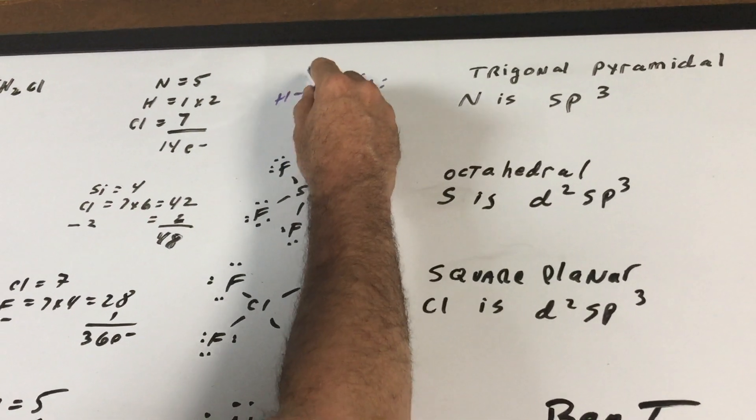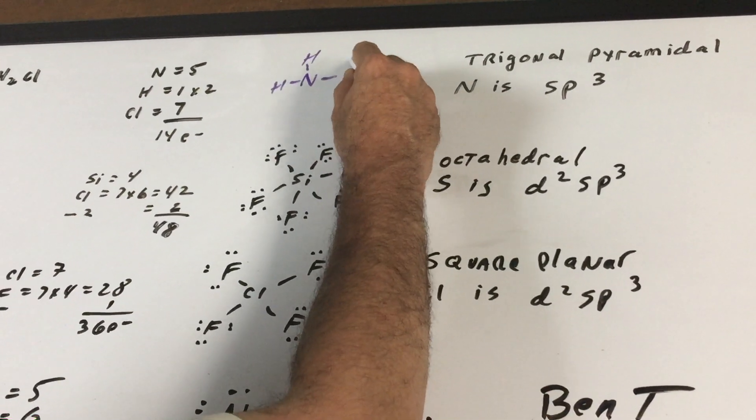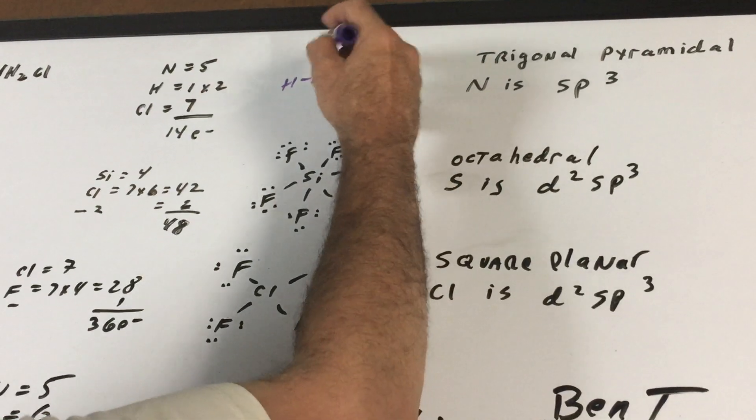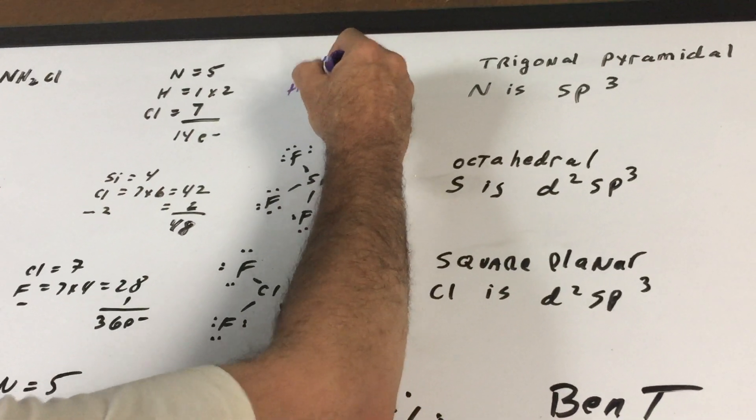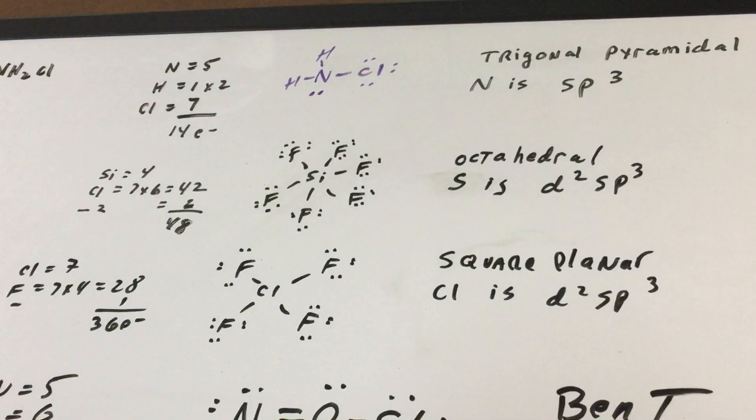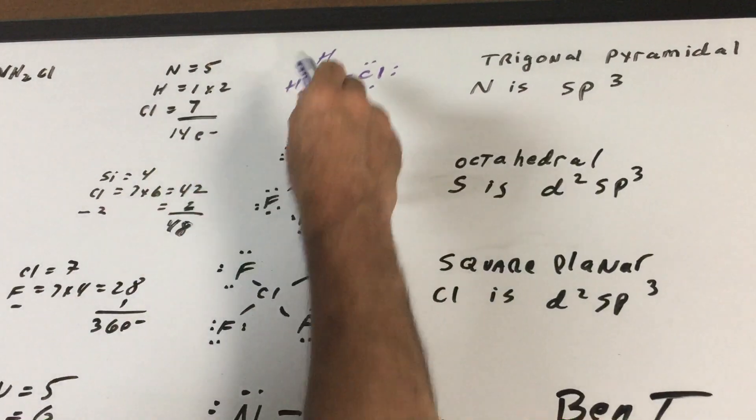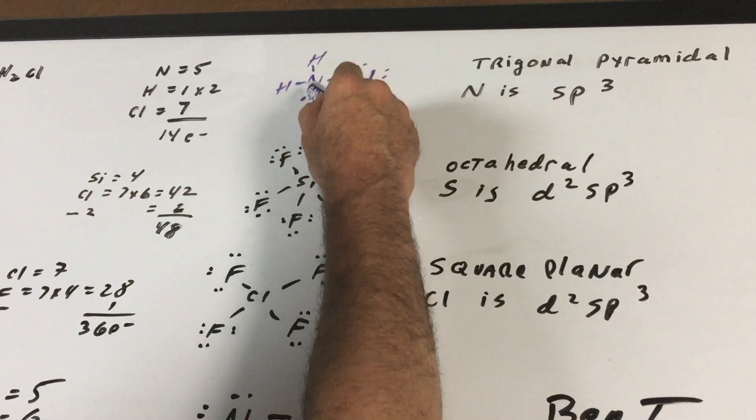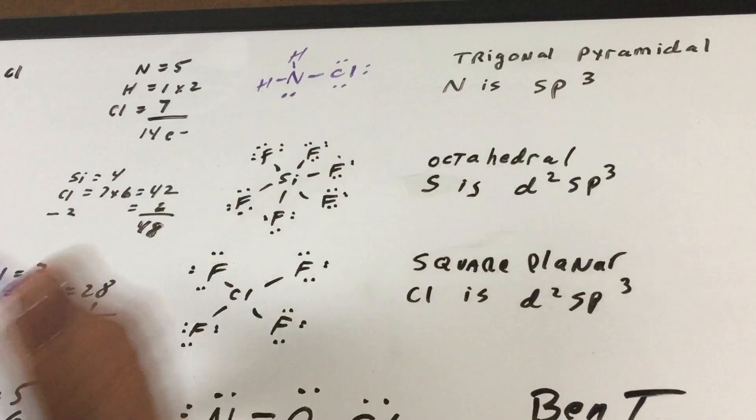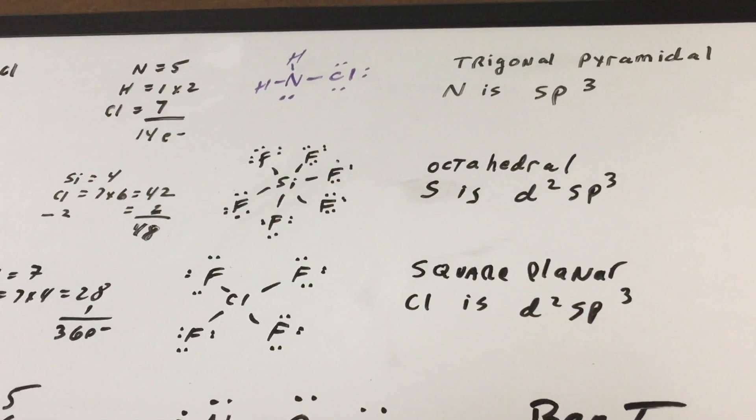So we have two, four, six, eight, ten, twelve, and we need two more and we put them on the nitrogen if there's any left over. So anytime you have three bonded areas and one lone pair, the shape is called trigonal pyramidal.